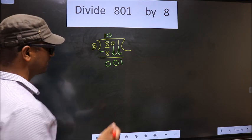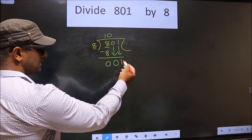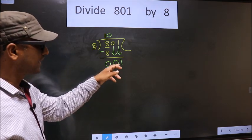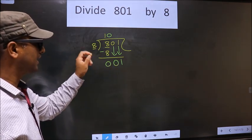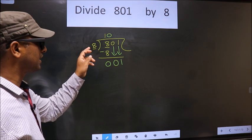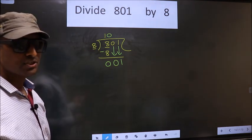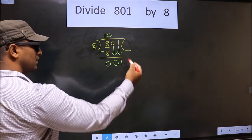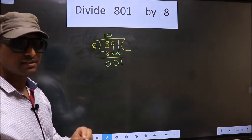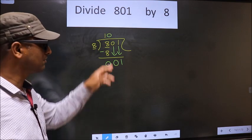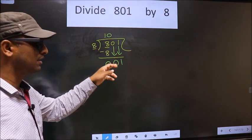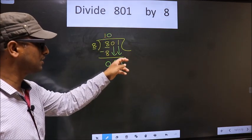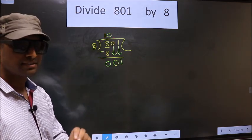Next. Now this is where the mistake happens. Here we have 1, here 8. 1 is smaller than 8. So what many do is they directly put a dot and take 0 here, which is wrong. Just now you brought the numbers down, and in the same step you want to put a dot and take 0 here, which is wrong.